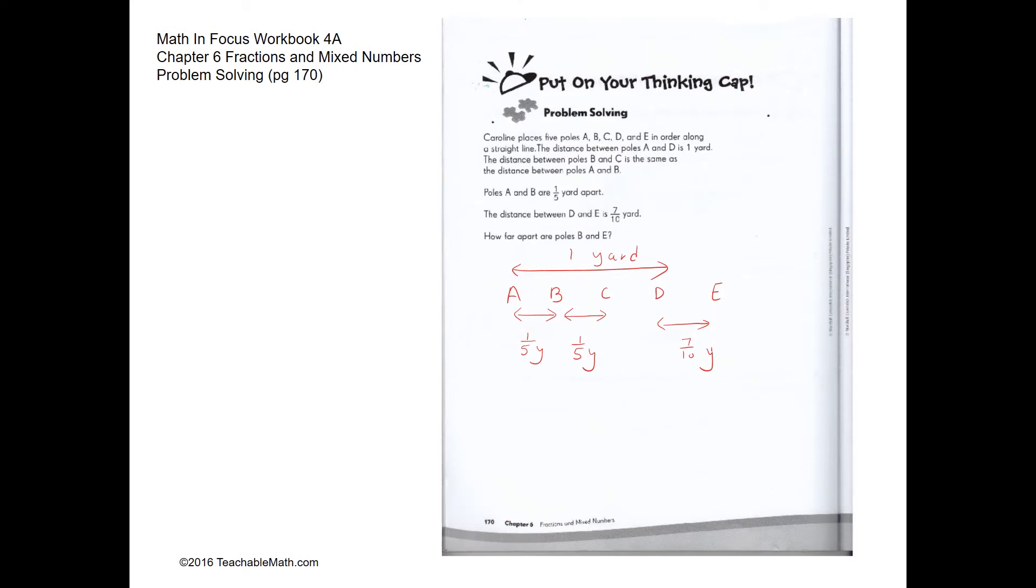Problem solving. So we have five poles over here: A, B, C, D, E. The distance between A and D is 1 yard. So we have 1 yard over here for the distance between A and D.